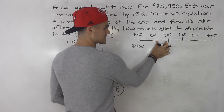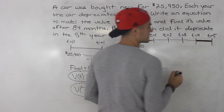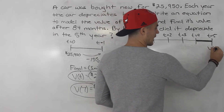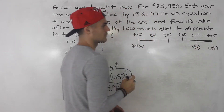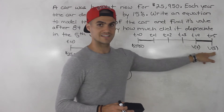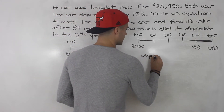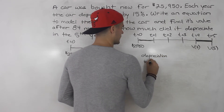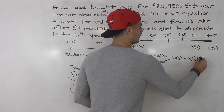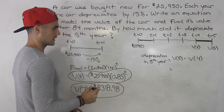They're asking for the difference in the value of the car between the fifth year and the fourth year. Because the car is depreciating, the value at t = 5 will be less than at t = 4. So the depreciation in the fifth year equals V(5) minus V(4) — that difference gives us how much the car lost in value during that year.